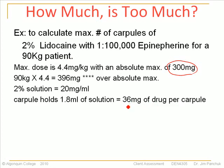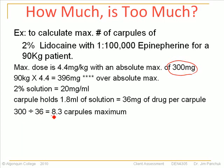The most we can give them is a maximum of 300 mg. So to find out how many carpules that is, we divide 300 by 36, and that gives us 8.3 carpules. That tells us the most anesthetic we can give a client, based on the lidocaine, is 8.3 carpules.